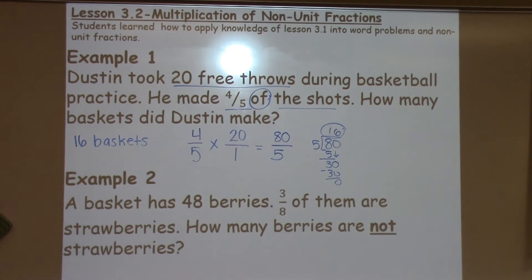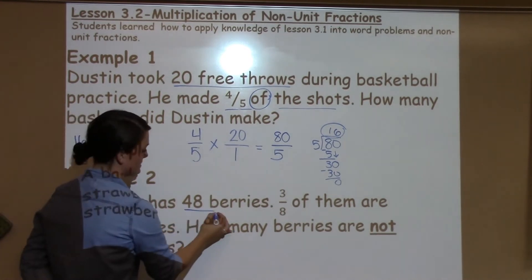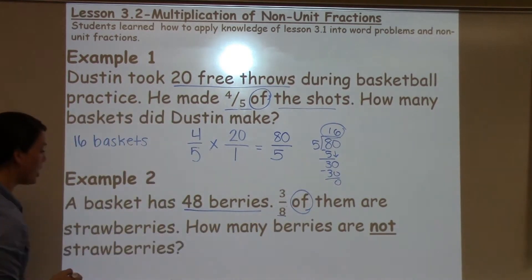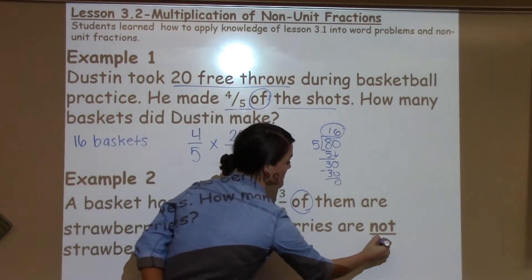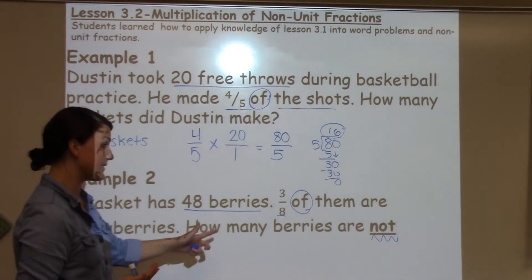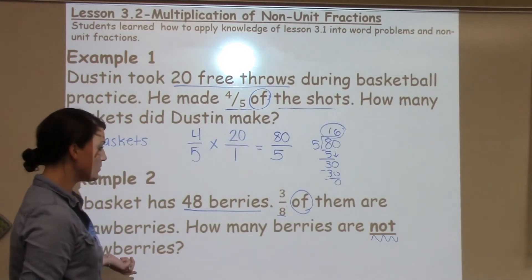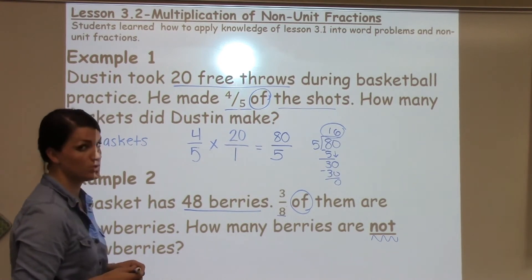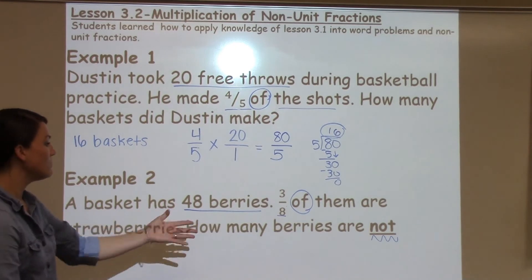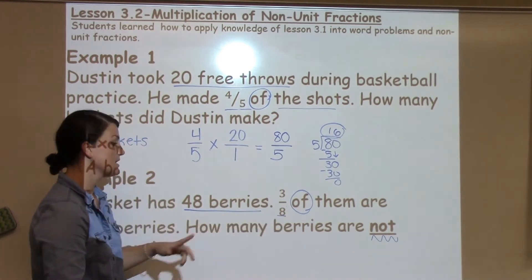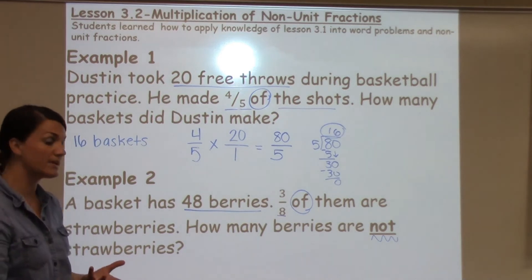Example 2 says: a basket has 48 berries. Three-eighths of them are strawberries. How many berries are NOT strawberries? The word 'not' is very important, because I have the math to figure out how many strawberries there are, but that's not what the question is asking. So this is going to be a two-step problem. First, we need to figure out how many berries is three-eighths of 48 — that will give me a whole number for how many strawberries we have.